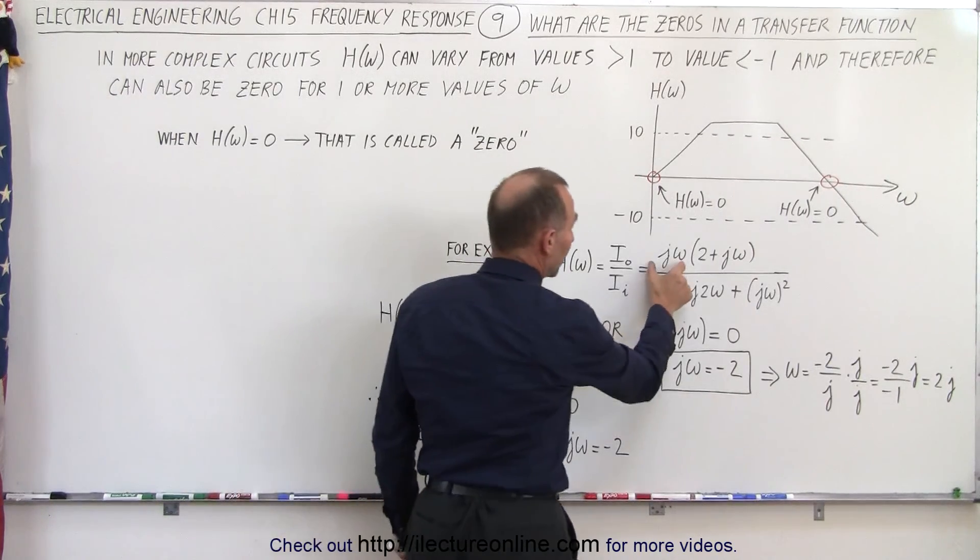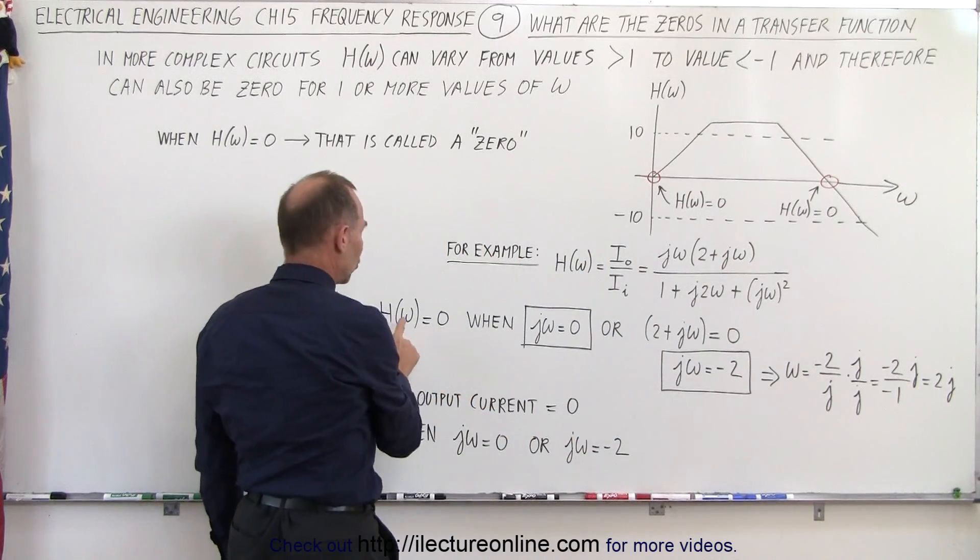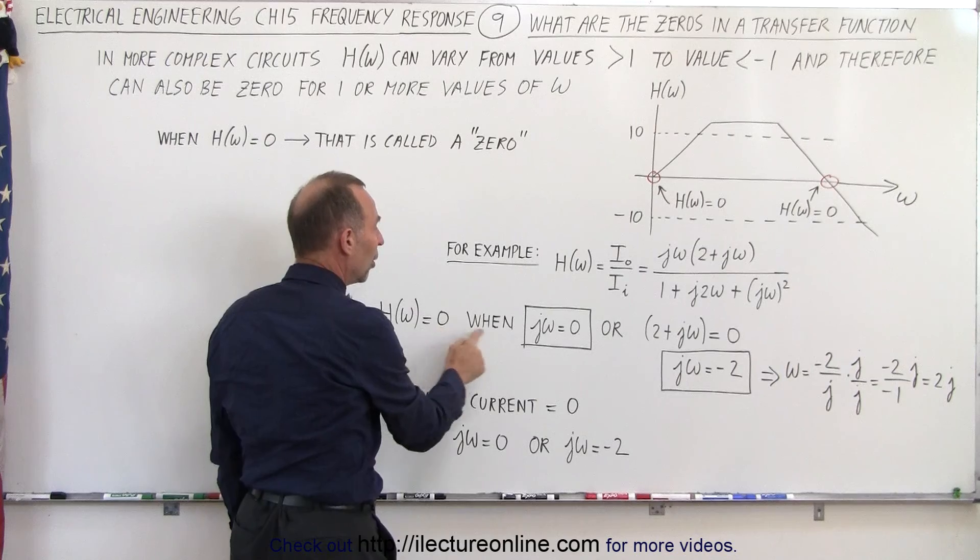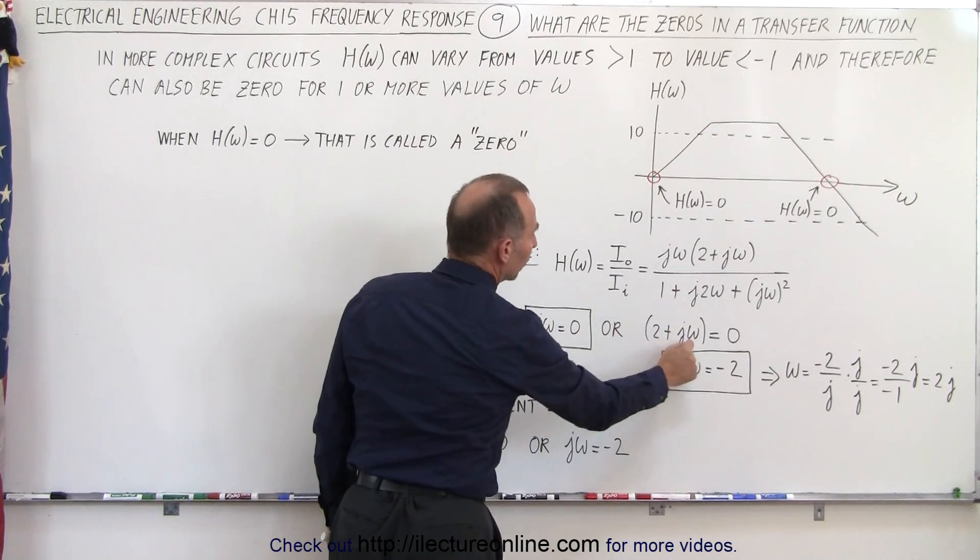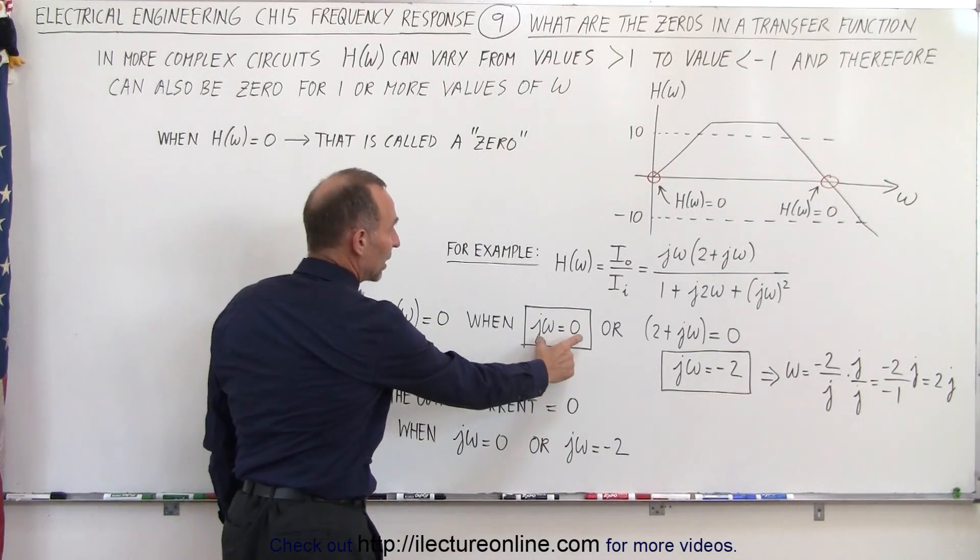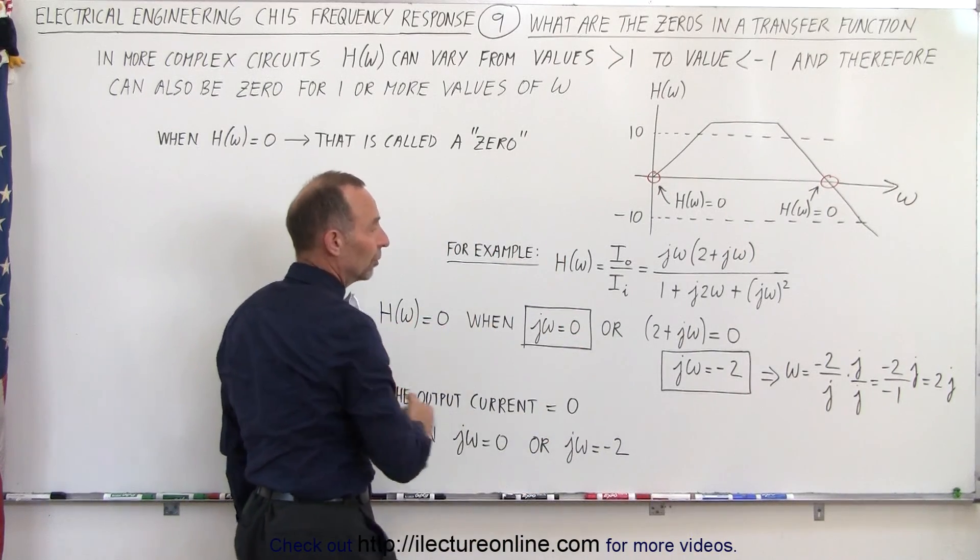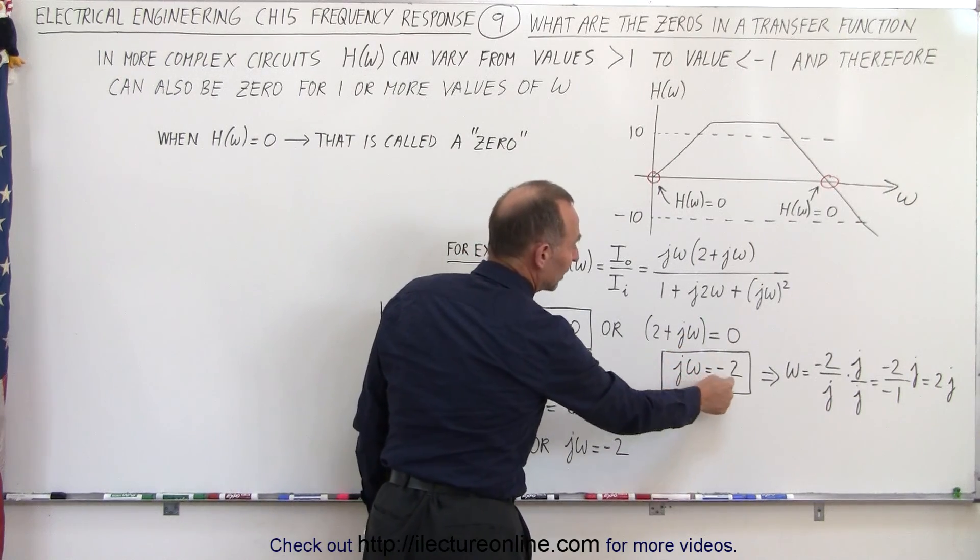And indeed, since we have a product of jω times (2+jω), we can see then that the transfer function will be equal to 0 when jω is equal to 0, or when the quantity (2+jω) equals 0, which means when jω equals 0, the transfer function is 0. And if we solve this for jω, we can see that jω, in this case, will be negative 2.